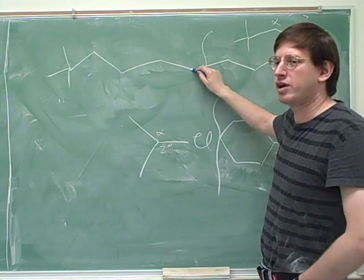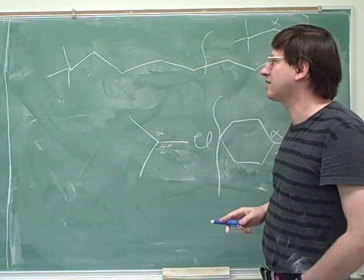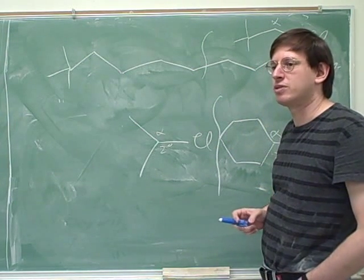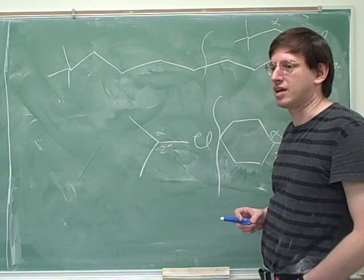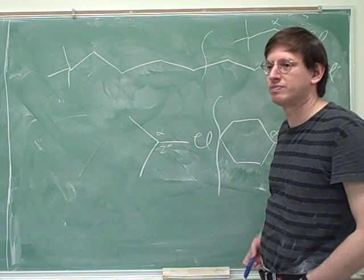But once you get out here, these are so far away, they're rarely going to be close enough to make any difference. Okay. So overall, the length of the chain doesn't really matter. Again, by far the most important thing is primary, secondary, or tertiary on the alpha carbon. Okay.